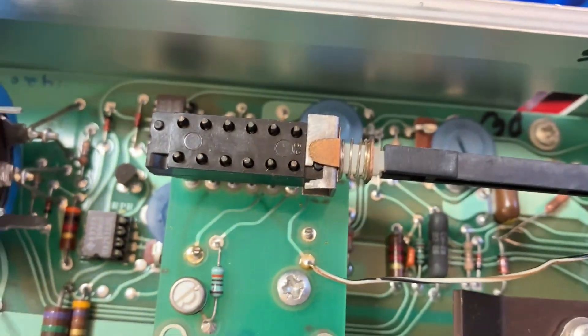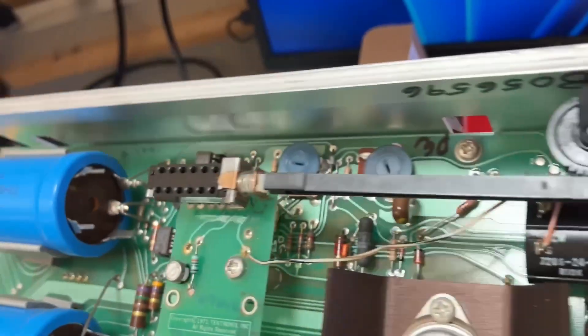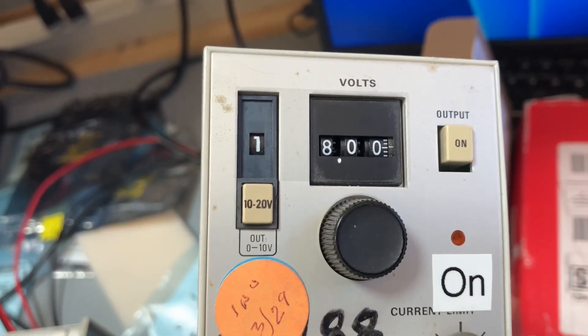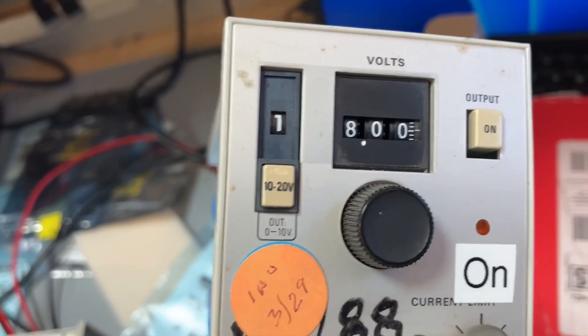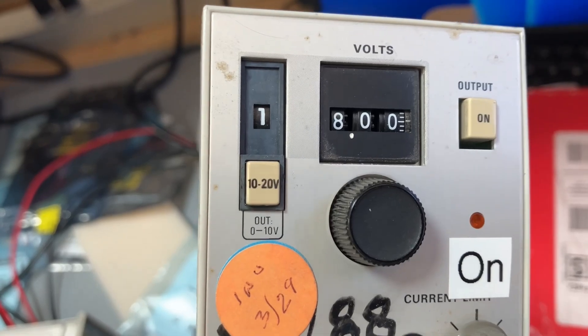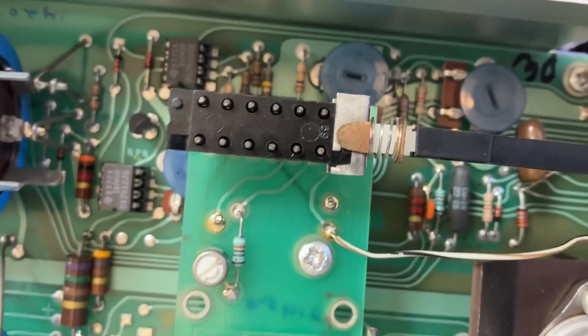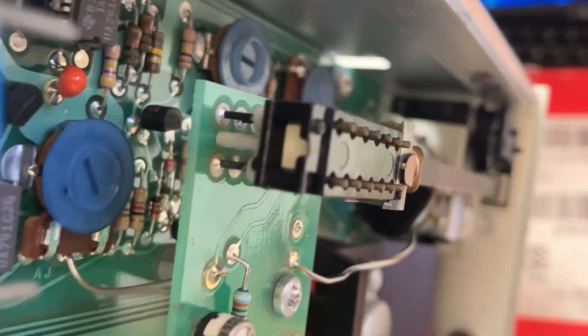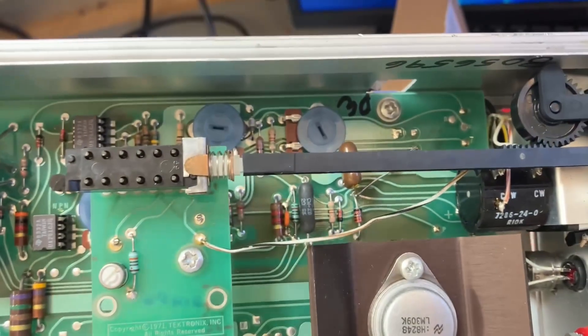It was making some of the contacts in here iffy - sometimes it would drop by two or three volts from where it should be, other times it was fine. It would sort of switch back and forth randomly. So it looks like it was a mechanical problem. Maybe I should spray some DeoxIT in here, I don't know. It's working for now.